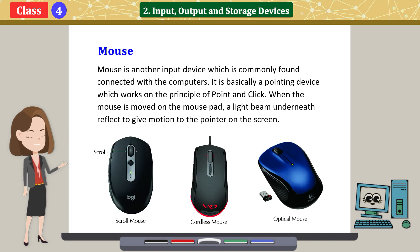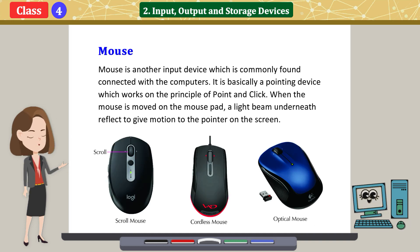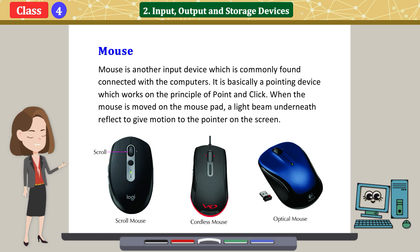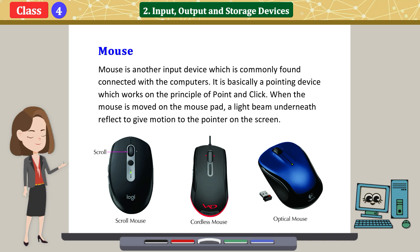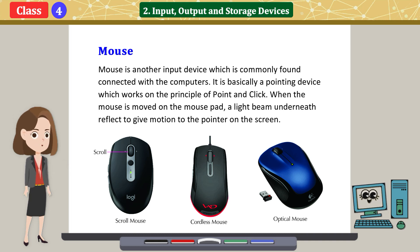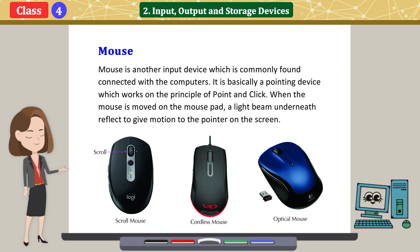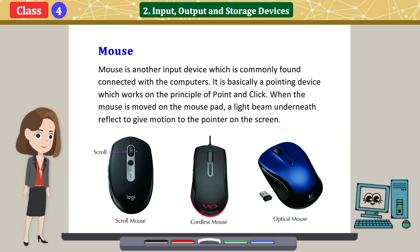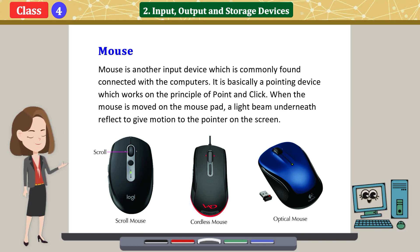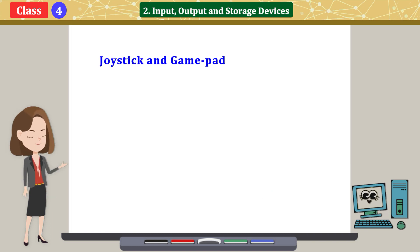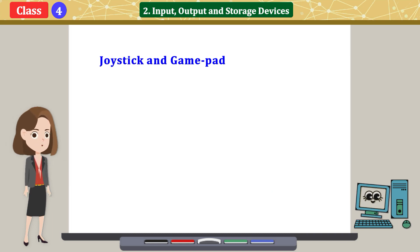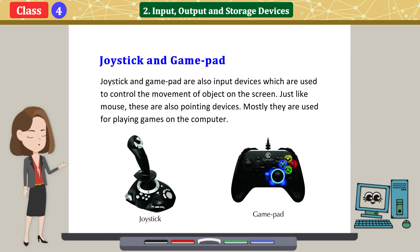Mouse is another input device which is commonly found connected with computers. It is basically a pointing device which works on the principle of point and click. When the mouse is moved on the mouse pad, a light beam underneath reflects to give motion to the pointer on the screen.